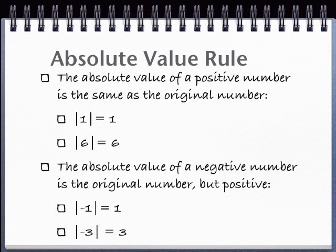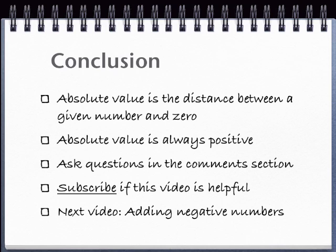See? Simple. So, to conclude, absolute value is the distance between any number and zero. Absolute values are always positive.